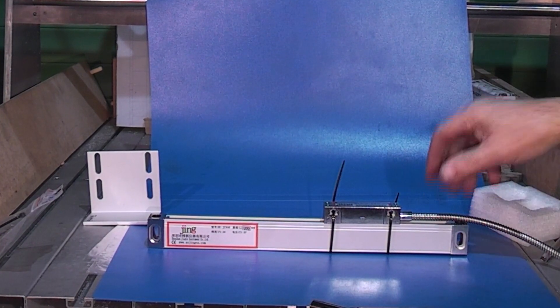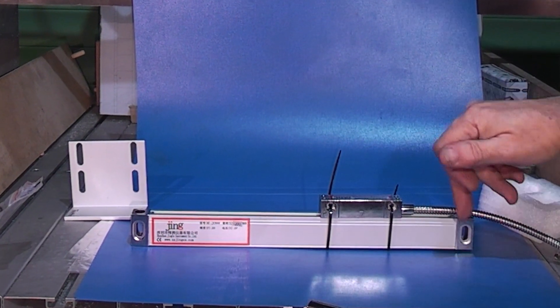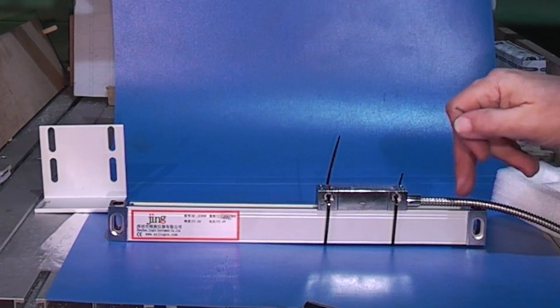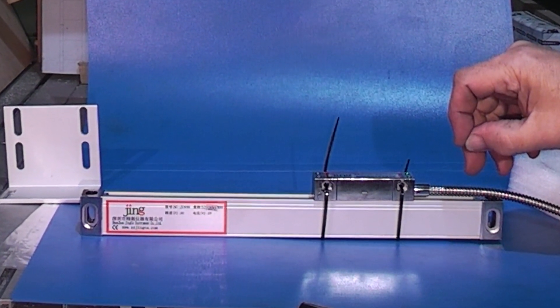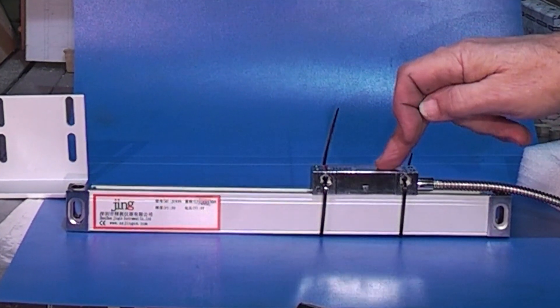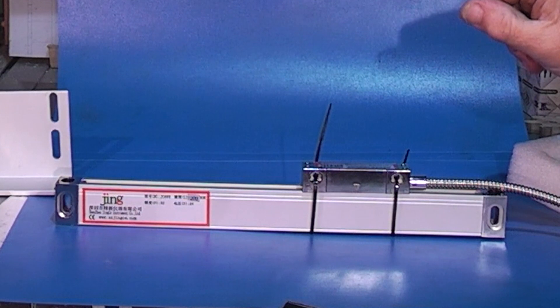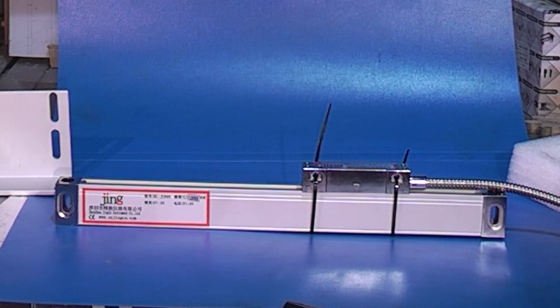You can get other scales. So this is a glass scale - what we mean by a glass scale: inside here is a piece of glass and on the glass is marked or etched divisions. So as this reader travels along it reads the divisions. You can get magnetic scales which are very similar to the scale on a digital caliper.